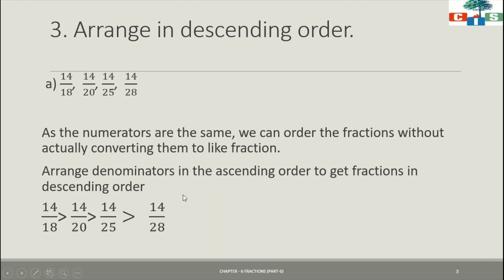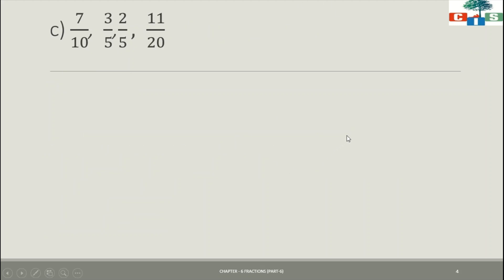This whole set of fractions is in descending order because the smaller the denominator, the greater the fraction — this we have already learned. Now we will see one more sum of question number 3, that is sum number C.